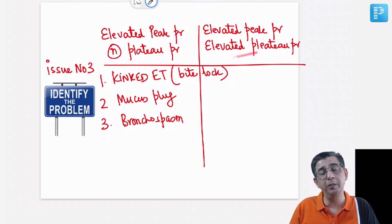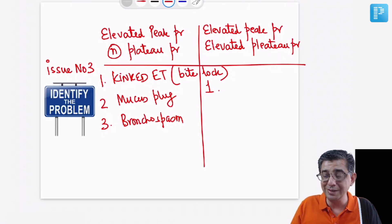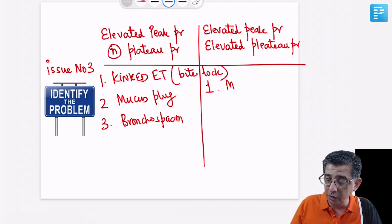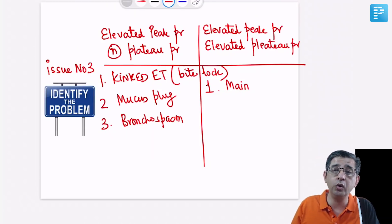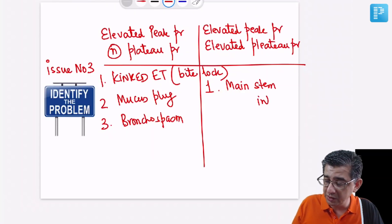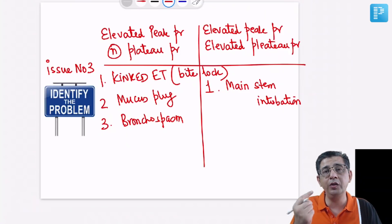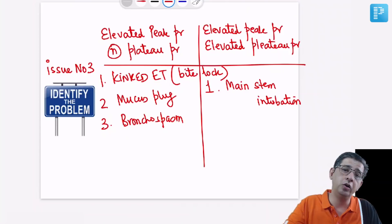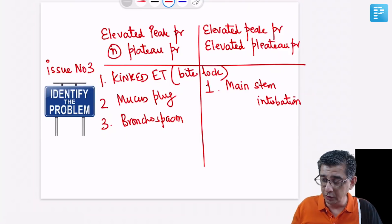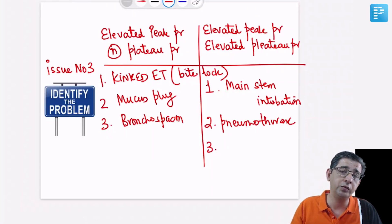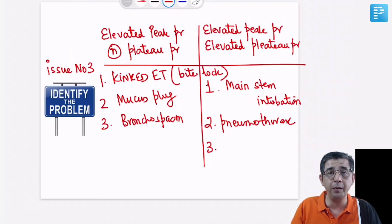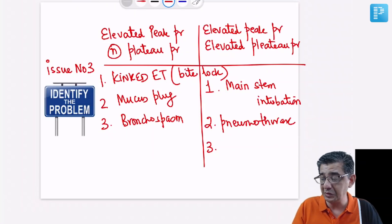In contrast, if the scenario shows both elevated peak pressure and elevated plateau pressure, not only the circuit but even the alveoli are affected. The first reason to consider is main stem intubation — the tube has not blocked but has slid to one side, typically the right, so you need to readjust the tube and pressures will settle. The next important reason is barotrauma causing pneumothorax, which could be pre-existing or iatrogenic. In COVID patients, the damaged lungs on invasive ventilation can develop pneumothorax with a drop in saturation.